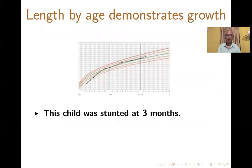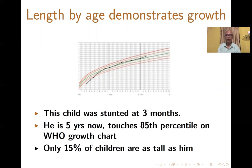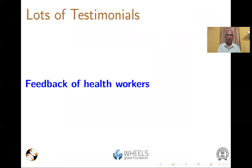This child was stunted at 3 months. He is 5 years now and touches the 85th percentile on the WHO growth chart — meaning only 15% of children are as tall as him. Here are more babies benefited by the exclusive breastfeeding method. We have feedback from healthcare workers also.